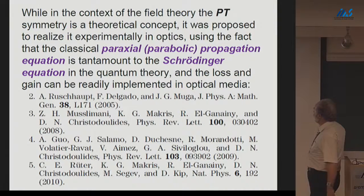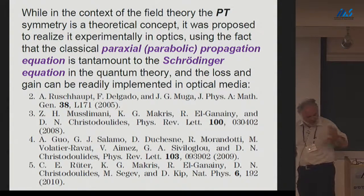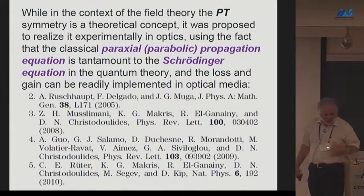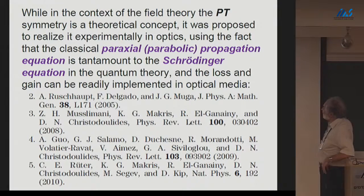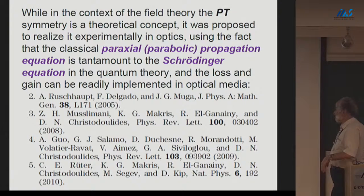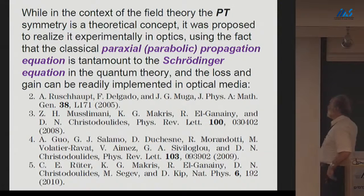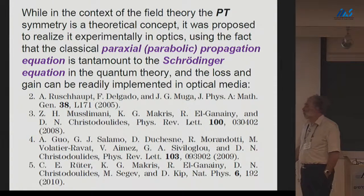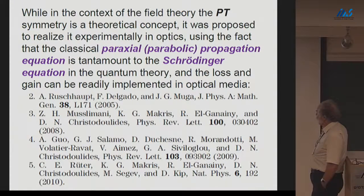In the paraxial approximation, the propagation of electromagnetic waves in optical waveguides is governed by essentially the same equation, though of purely classical origin derived from Maxwell's equations. Nevertheless, the form of the equation is essentially the same Schrodinger equation, which may contain a complex potential whose real and imaginary parts represent gain and loss elements inserted into the optical waveguide.